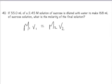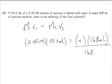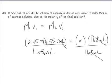This problem is a dilution problem, so what you're going to do is you're going to take the initial molarity, 2.45 molar, times the volume, which is 55 milliliters. Well, I know that the final molarity is unknown, but the final volume is 168 milliliters. If I divide both sides by 168 mils, they go away, milliliters go away, multiply and divide, you get 0.802 molar.